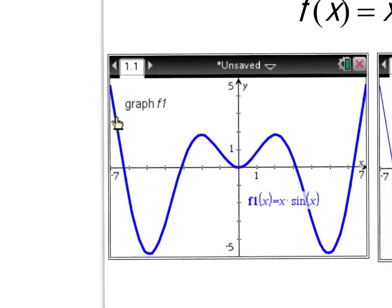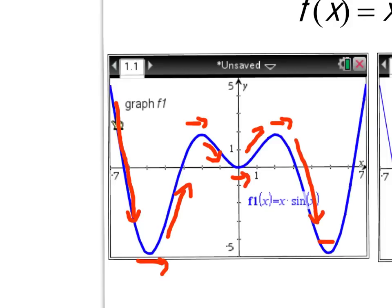So first thing I notice is that it goes down, then it kind of levels off, and then it goes up, levels off, goes down, levels off, goes up, levels off, goes down, levels off, and goes back up again. Okay, so this graph, from an increasing and decreasing behavior, does a lot. It goes up and down, up and down.